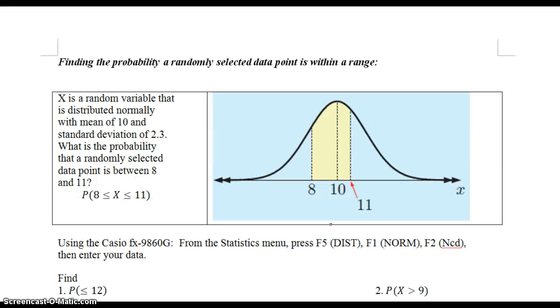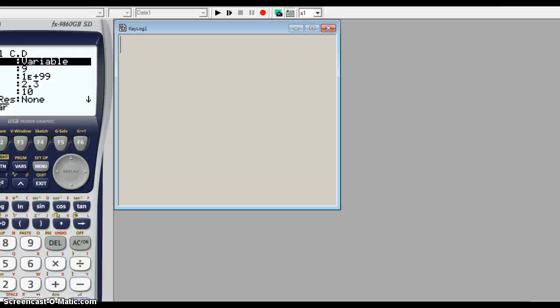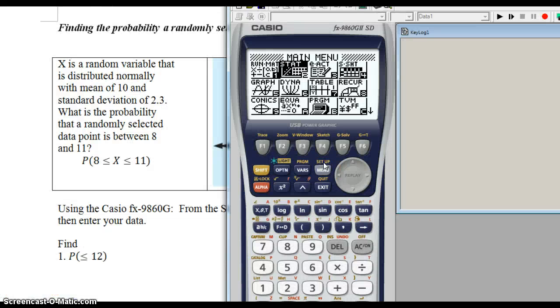What we do is we go to the stats menu, press F5 for distribution, F1 for norm, and then F2 for NCD, and then we enter the data. Let me show you what that looks like. Hold on one sec, let me adjust the screen.